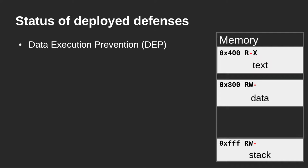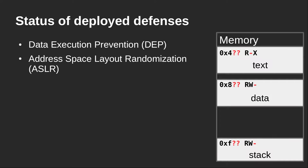DEP ensures that we can no longer inject new code like shellcode to escalate privileges. A second step is Address Space Layout Randomization. Instead of allocating pieces of an application at well-known locations, we scramble these locations every time the application starts, making it harder for the attacker to guess where individual locations are.